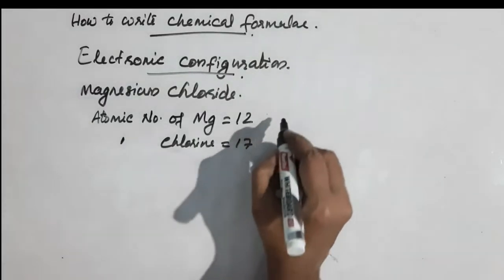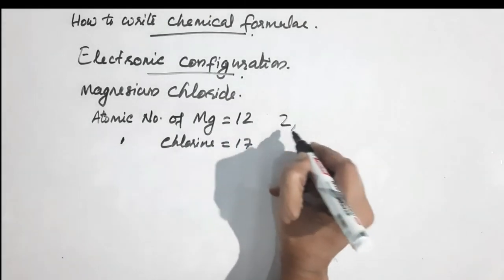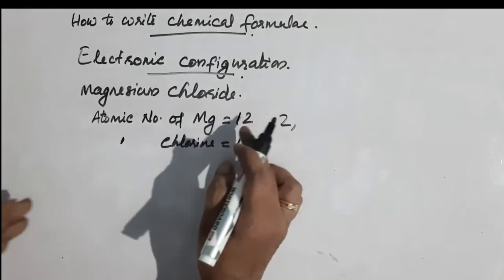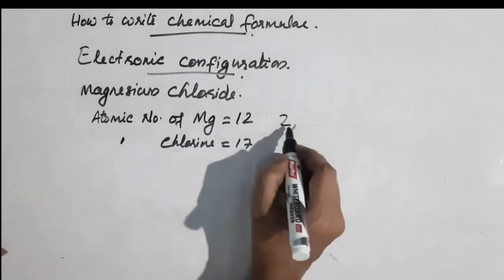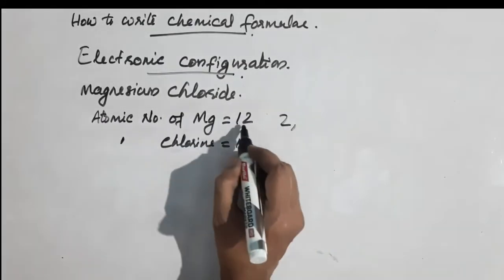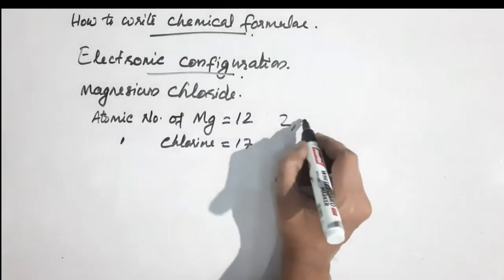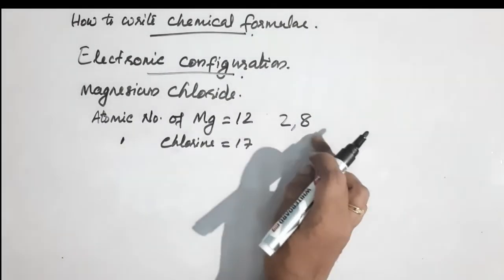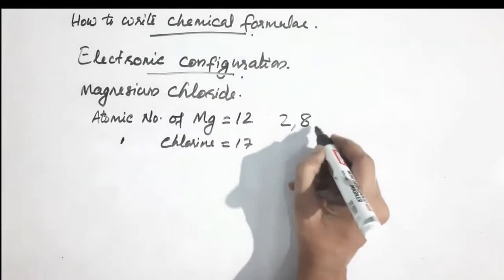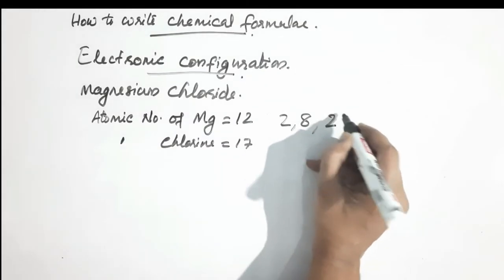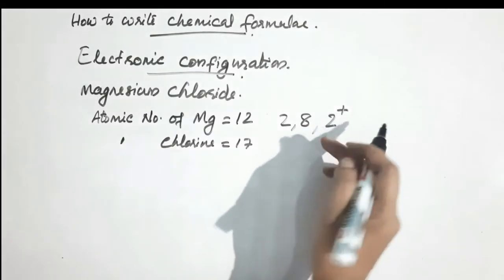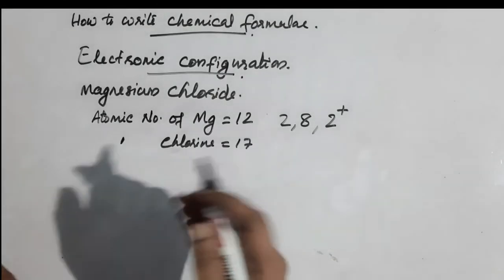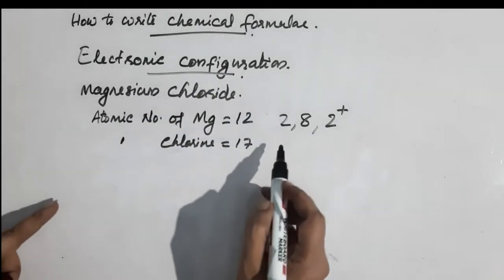Here we have 2. That means the total is 12. K is equal to 2, L is equal to 8, and the remaining 2 go into M. So the electronic configuration of magnesium is 2, 8, 2.